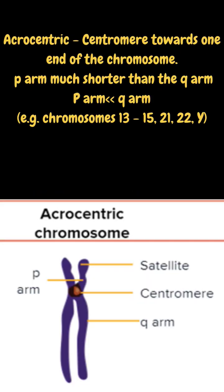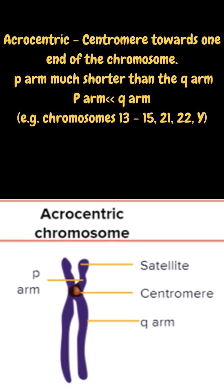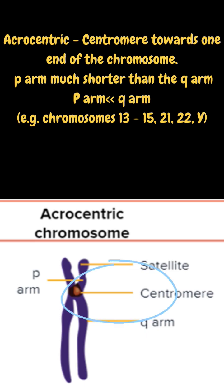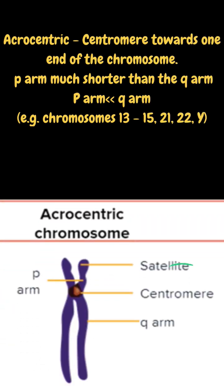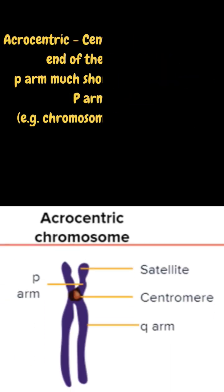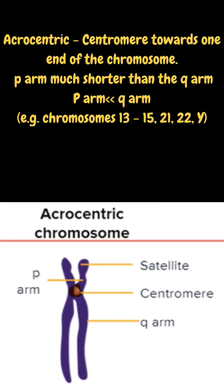Third type is Acrocentric. In that type, the position of the Centromere is towards the end of the chromosome, but not exactly at the end. In that type also, the P arm is shorter than the Q arm.